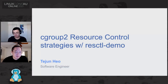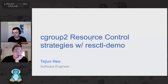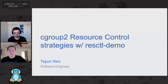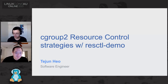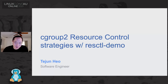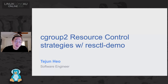Welcome back everyone. For our next talk we've got TJ, a kernel hacker who has been working on various subsystems of the kernel for the past two decades. In the past few years he's been focused on developing cgroup2 resource control mechanisms, which is what he's going to be talking about. Please welcome TJ. I work at the Facebook kernel team and I've been working on resource control, so today's presentation is about cgroup2 resource control using something called resource control demo.